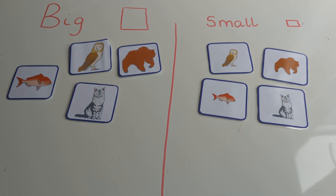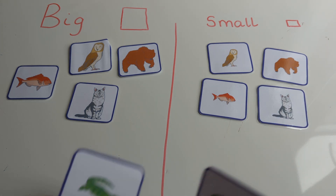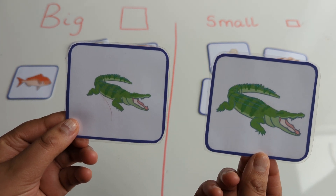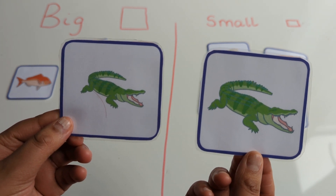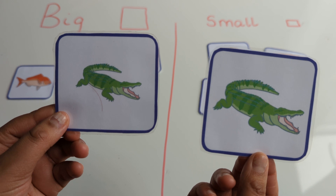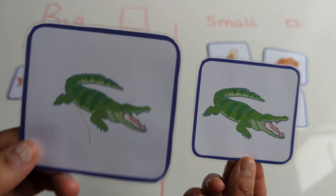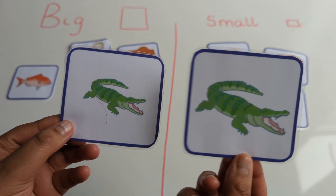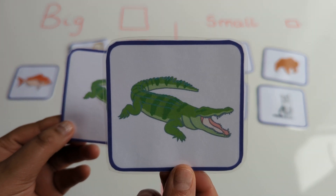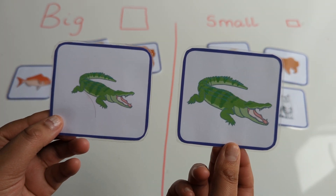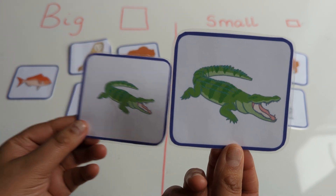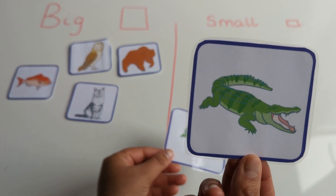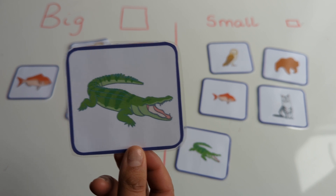Let's have a look. What's next? I've got two crocodiles. Which one's smaller? Is this the smaller crocodile or is this the smaller crocodile? That's right, this is the smaller crocodile. And this is the bigger crocodile.